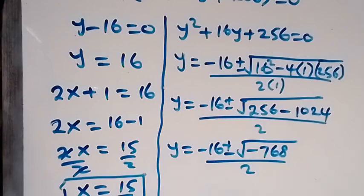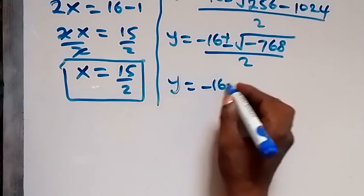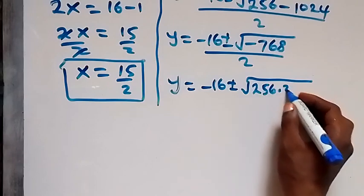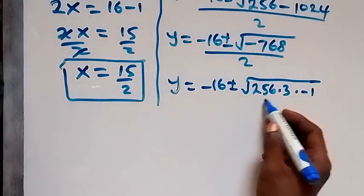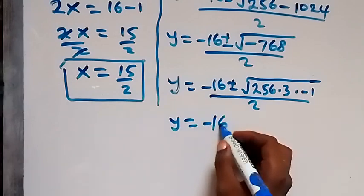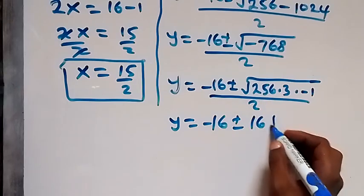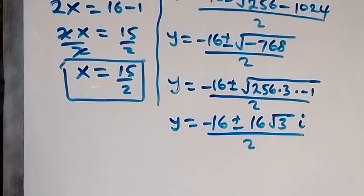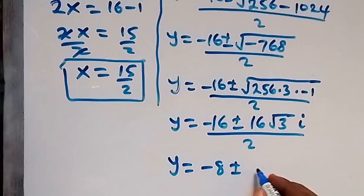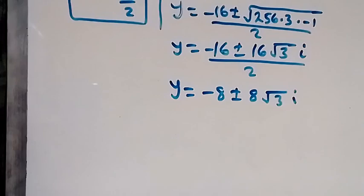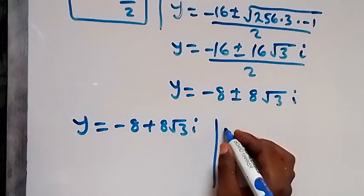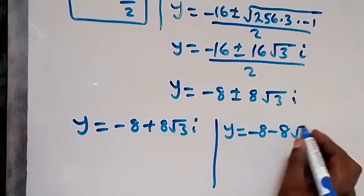We can separate this: y equals minus 16 plus or minus square root of 256 times 3 times minus 1, all divided by 2. The square root of 256 is 16, and square root of minus 1 is i. So y equals minus 16 plus or minus 16 times root 3 times i, all over 2. Simplifying, this becomes y equals minus 8 plus or minus 8 root 3 i. So y equals minus 8 plus 8√3·i, or y equals minus 8 minus 8√3·i.